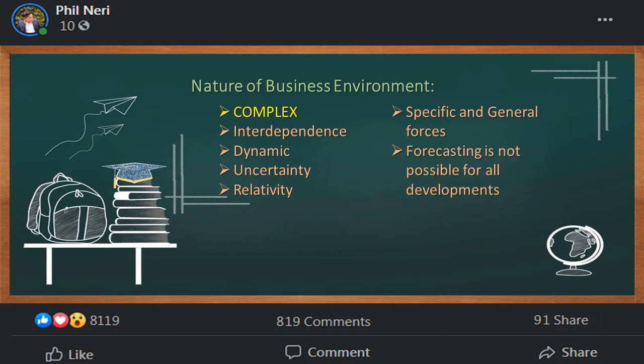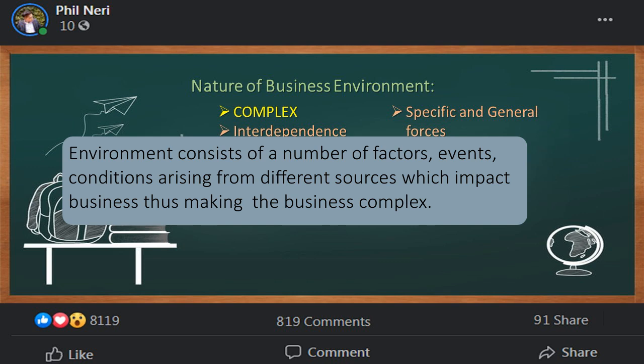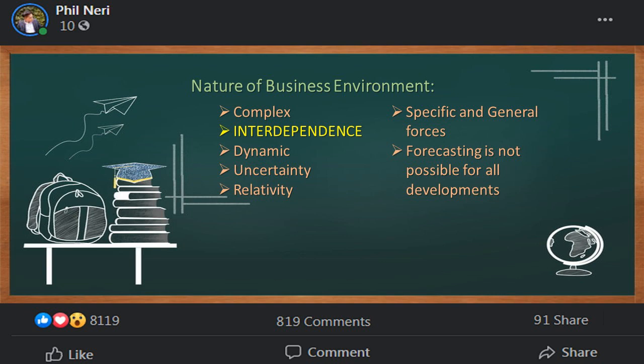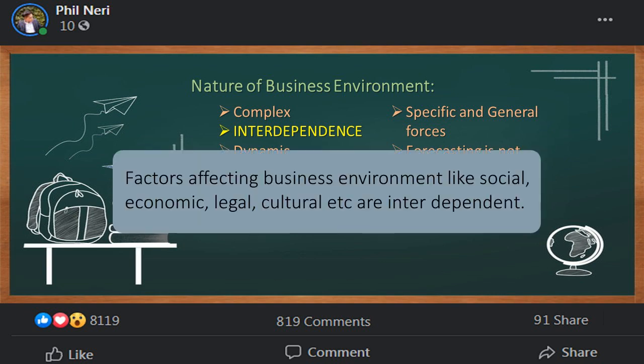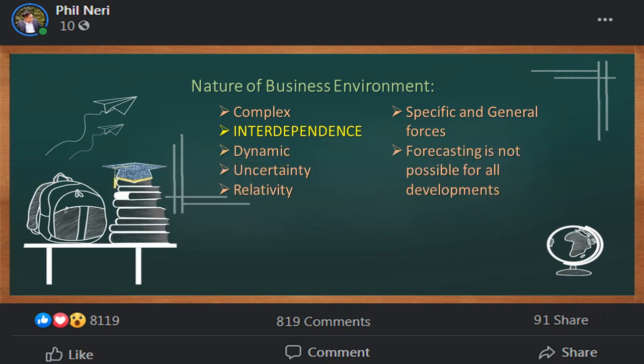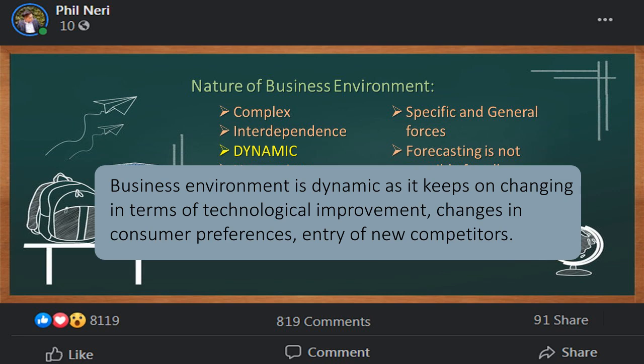When we say complex, the environment consists of a number of factors, events, and conditions arising from different sources which impact business, thus making the business complex. Interdependence means that factors affecting business environment — like social, economic, legal, cultural, etc. — are interdependent. For example, a rich country can make sufficient expenditure on research and development. Dynamic means the business environment is dynamic as it keeps on changing in terms of technological improvement.